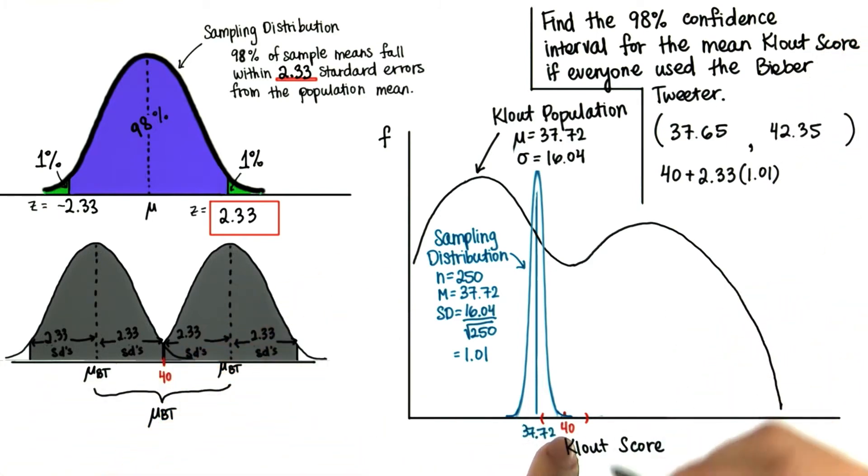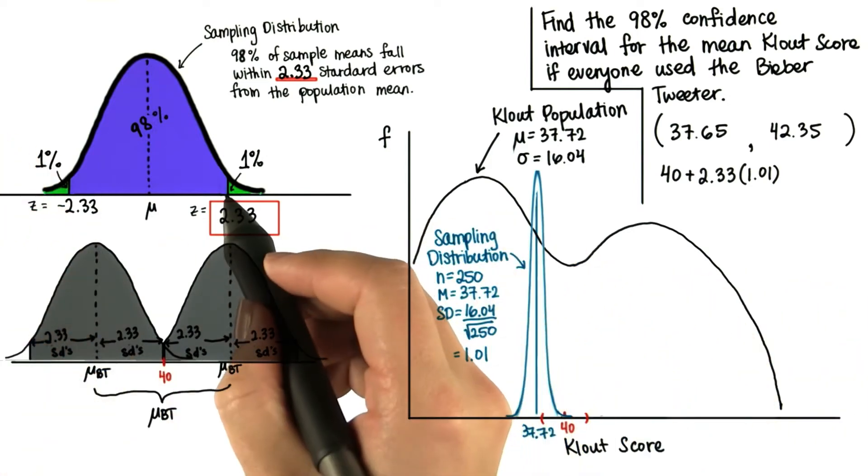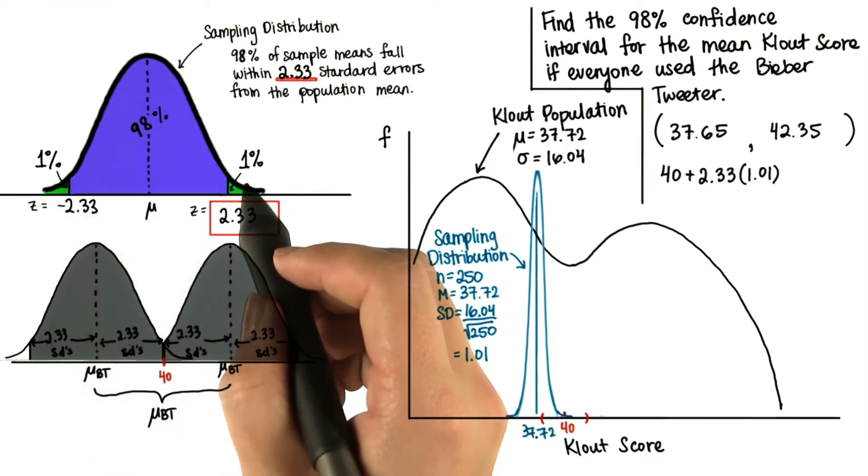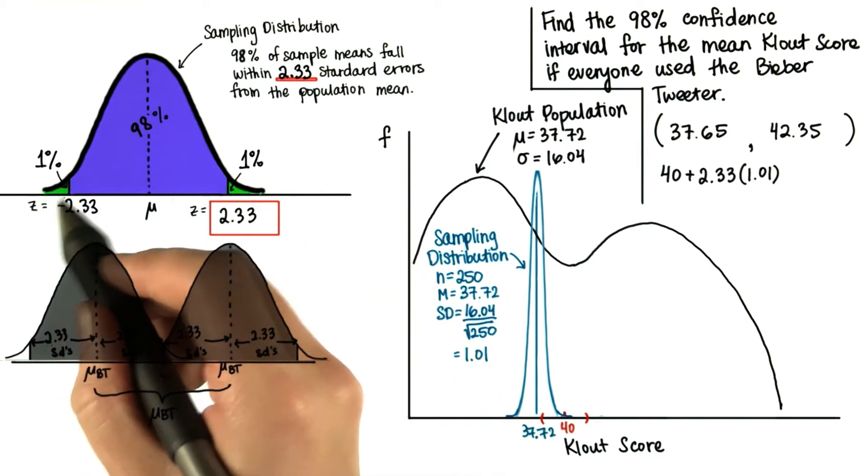So basically we got this sample mean, 40, and we decided that it's possible that it's either here or here on the distribution. Such that 1% of the data is either above it or below it.